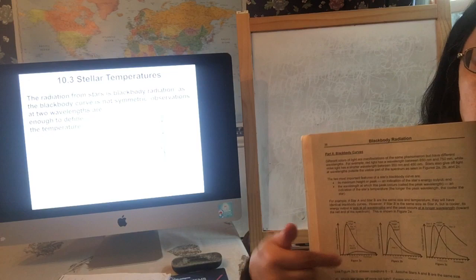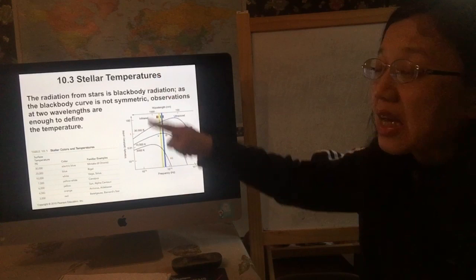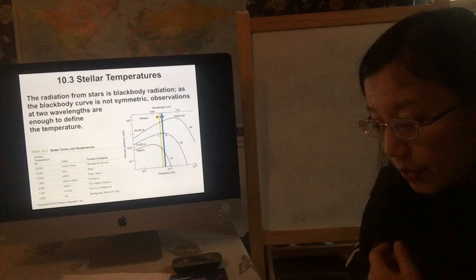So that's how you do this exercise. To recap, two things: how high the peak is tells you the intensity of the light, and where the peak happens tells you the temperature of the star as well as the color of the star.